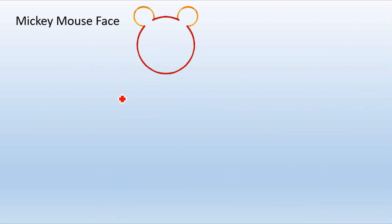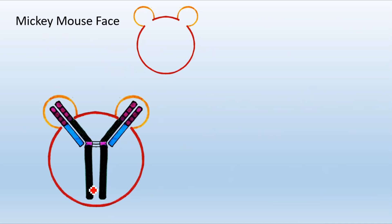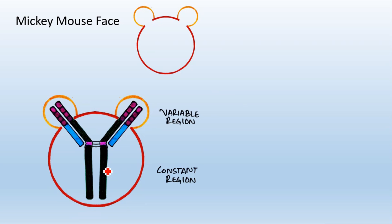Next we have the Mickey Mouse face analogy. If we fit the antibody within the Mickey Mouse face, the portions present within Mickey's ears — the yellow structures — are called the variable region, because they vary from antibody to antibody and give each antibody its unique identity. The portion covered by the face or the red circle is the constant region, which remains the same across different antibodies.